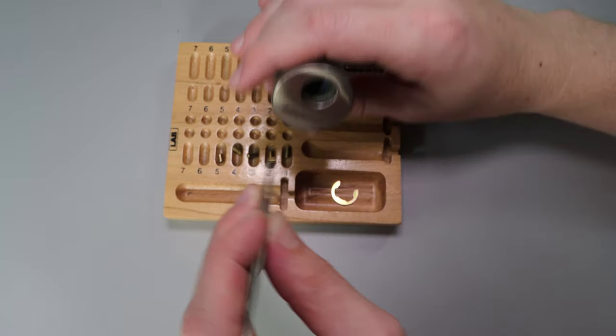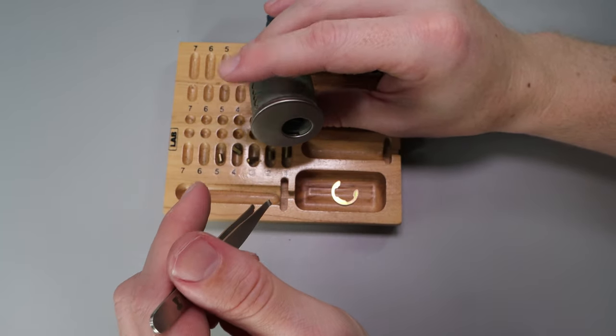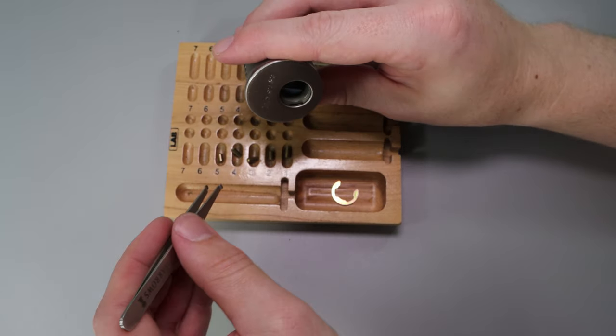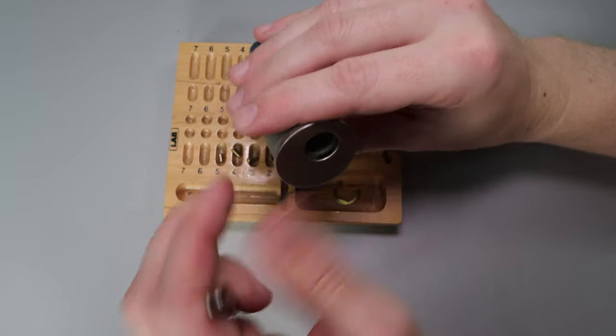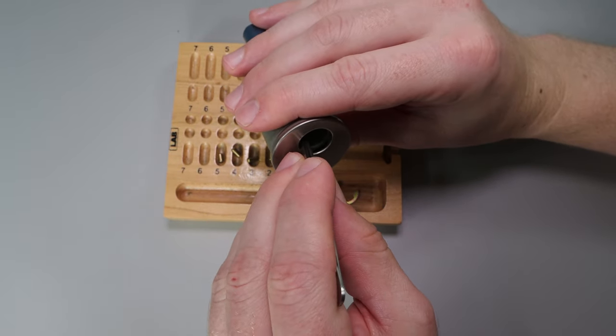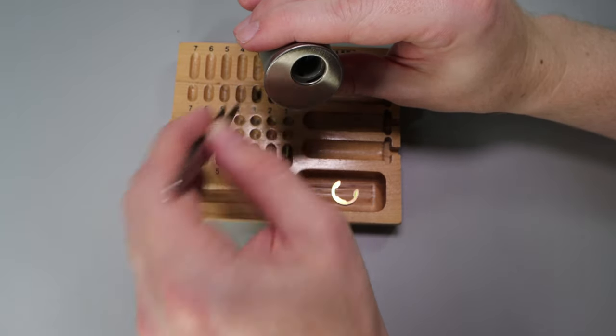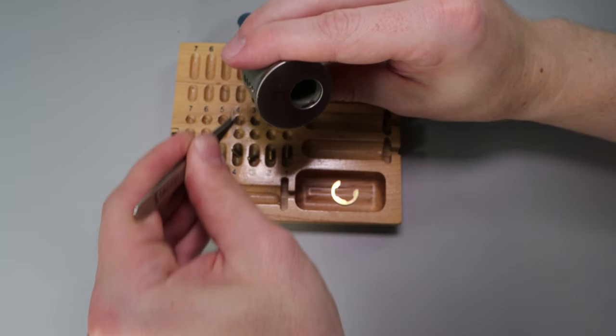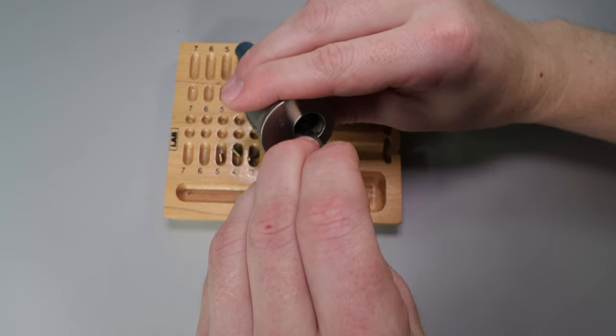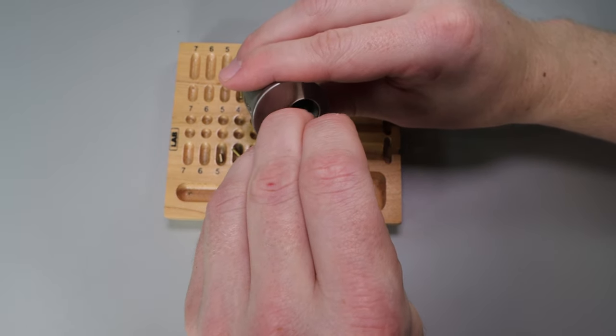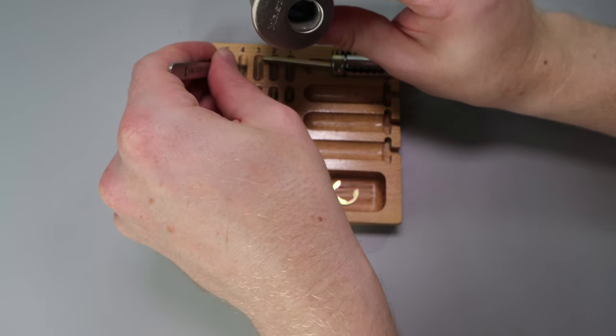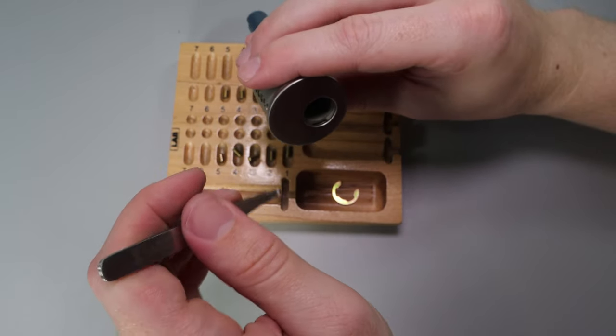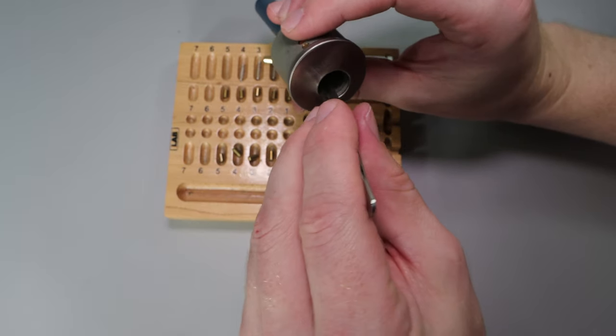And then in position two you're going to have a standard spin spool and a steel spring. Same thing in position three. This lock didn't really pick like it had any security pins in it. Now position four is going to be a standard pin and a steel spring. And position five is going to be the same situation.